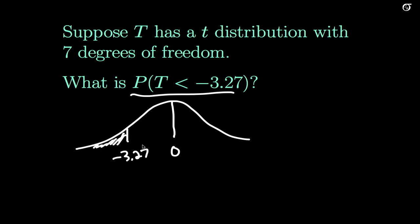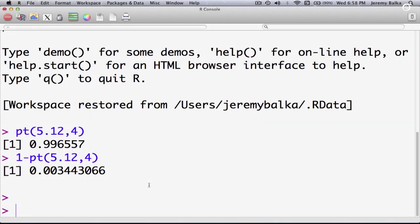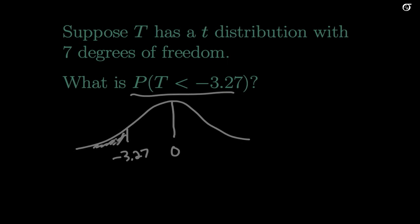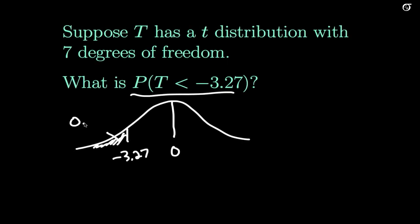Lucky for us, if we go to a computer, that's exactly the area that computers give us. In my computer package R, I would simply have to go PT(-3.27, 7) with 7 degrees of freedom, because that is precisely what R gives me, the area to the left of the value I look up. And that's what I need in this particular case. So that's going to be 0.0068.